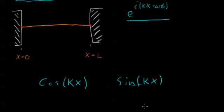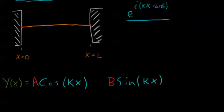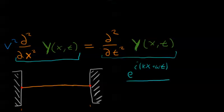These are two possible solutions to the differential equation. One property of differential equations is that any linear combination of solutions is also a possible solution. So cosine of kx could be a solution, sine of kx could be a solution, but also any number times cosine plus any number times sine could also be a solution.